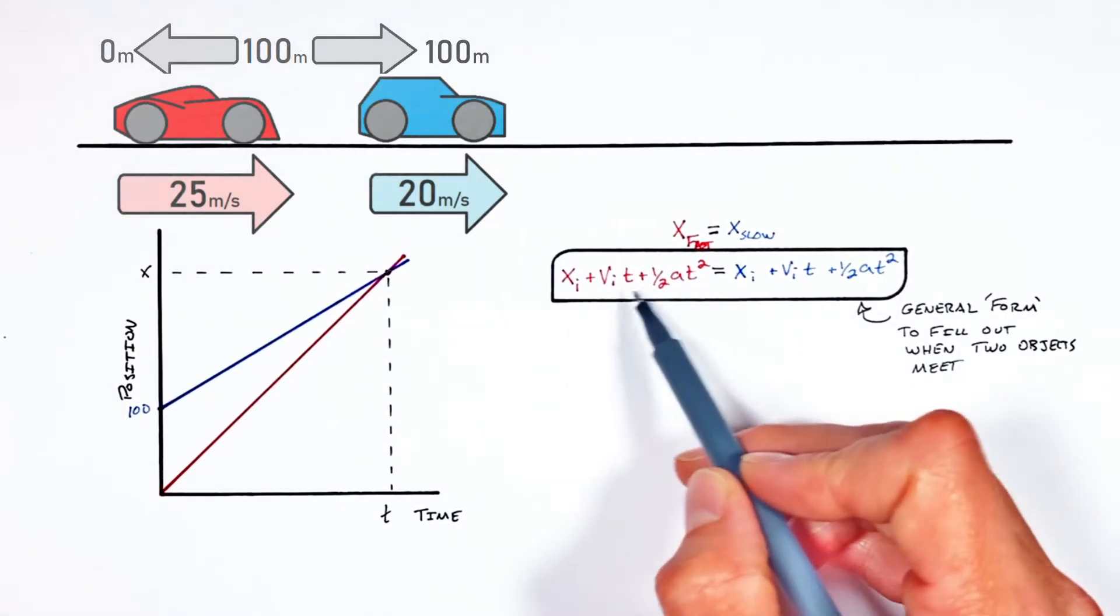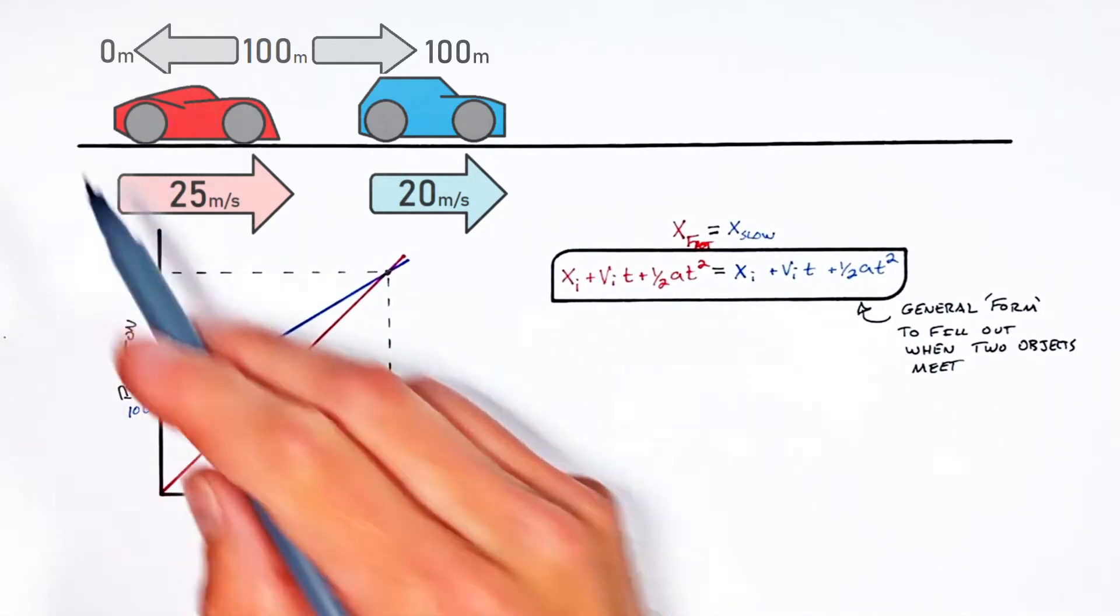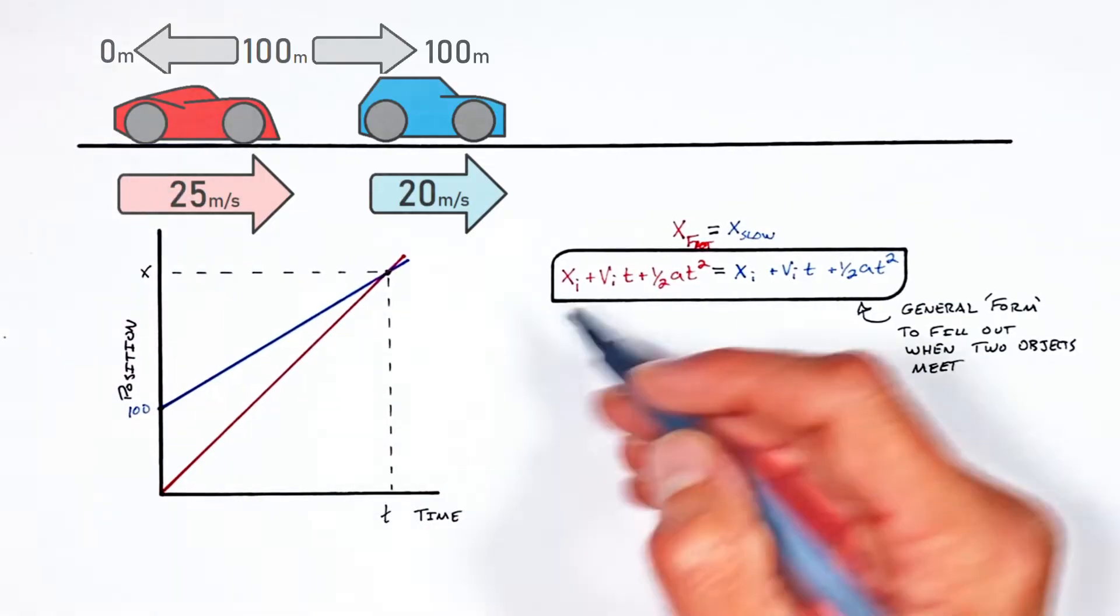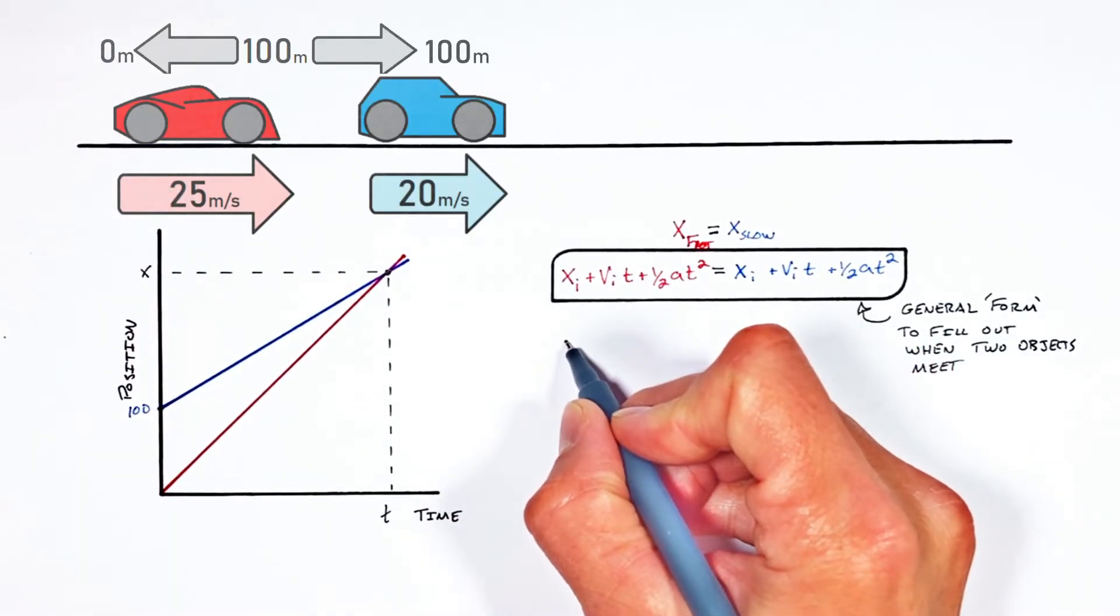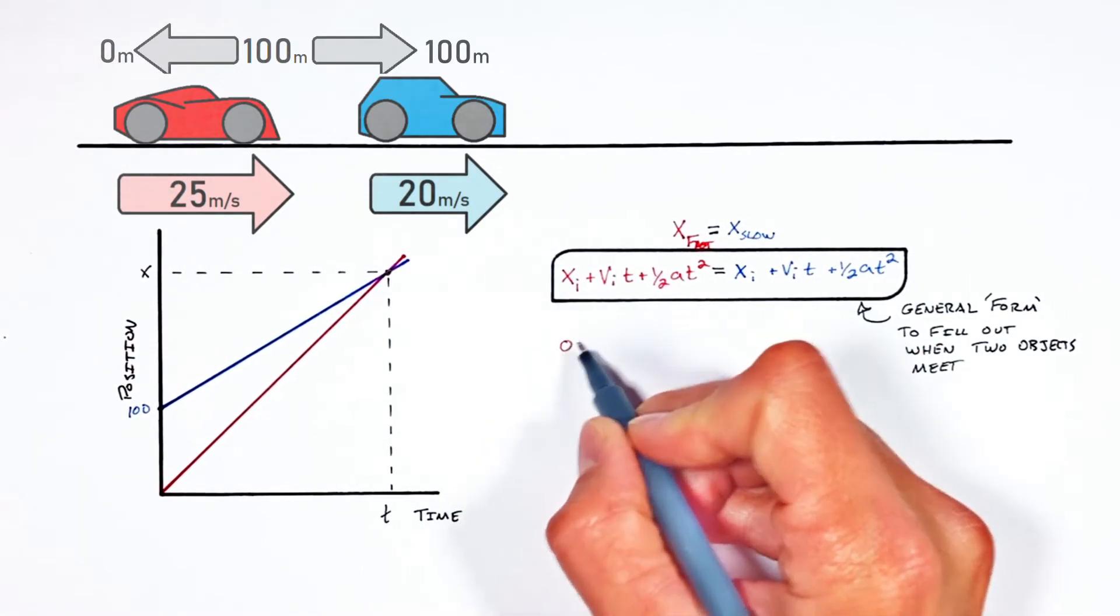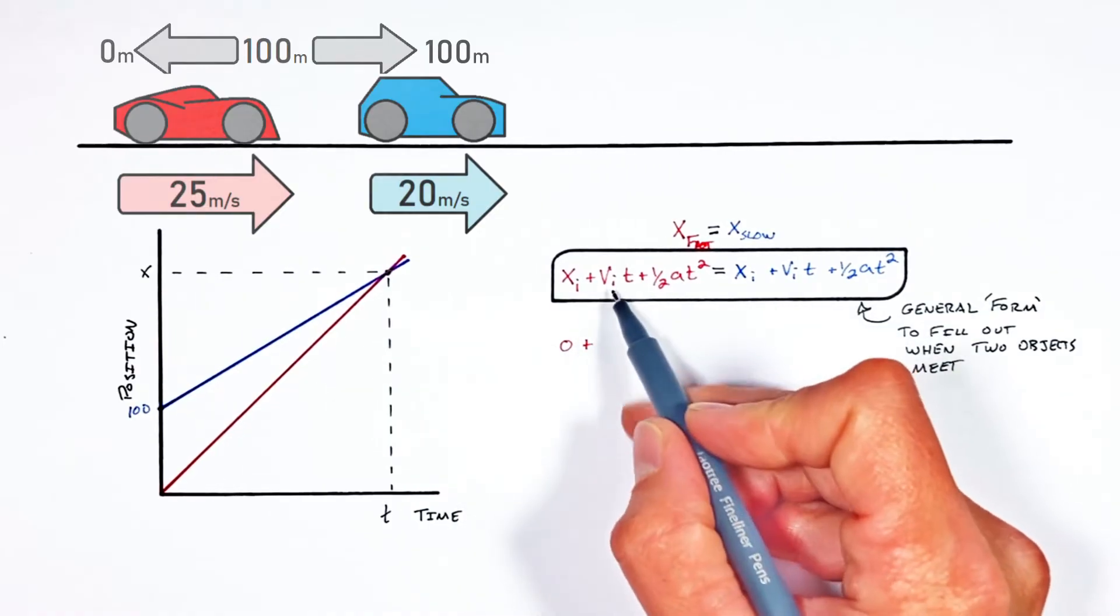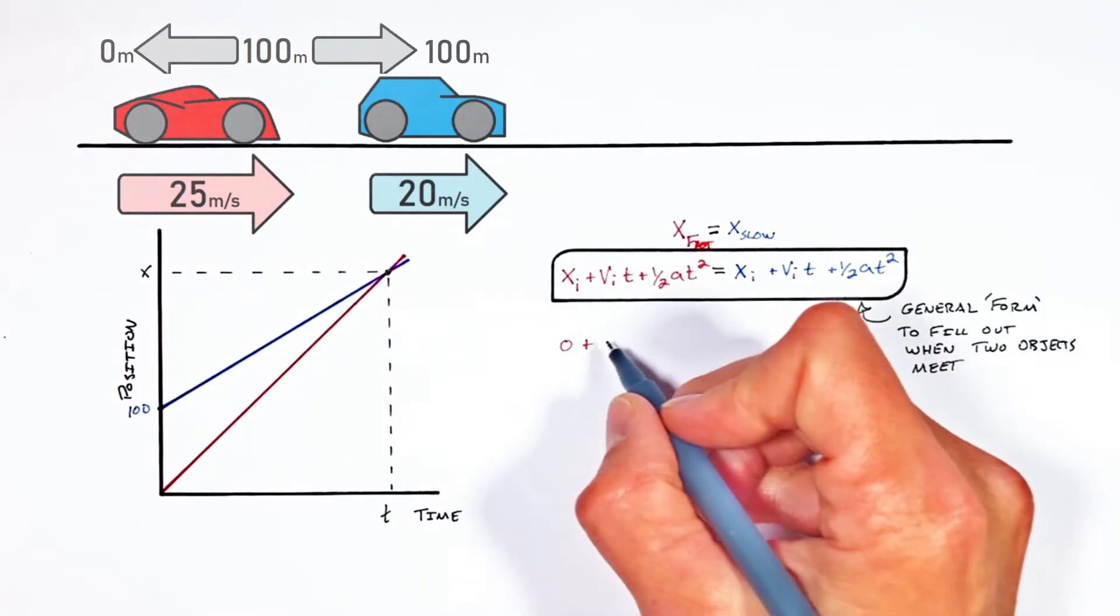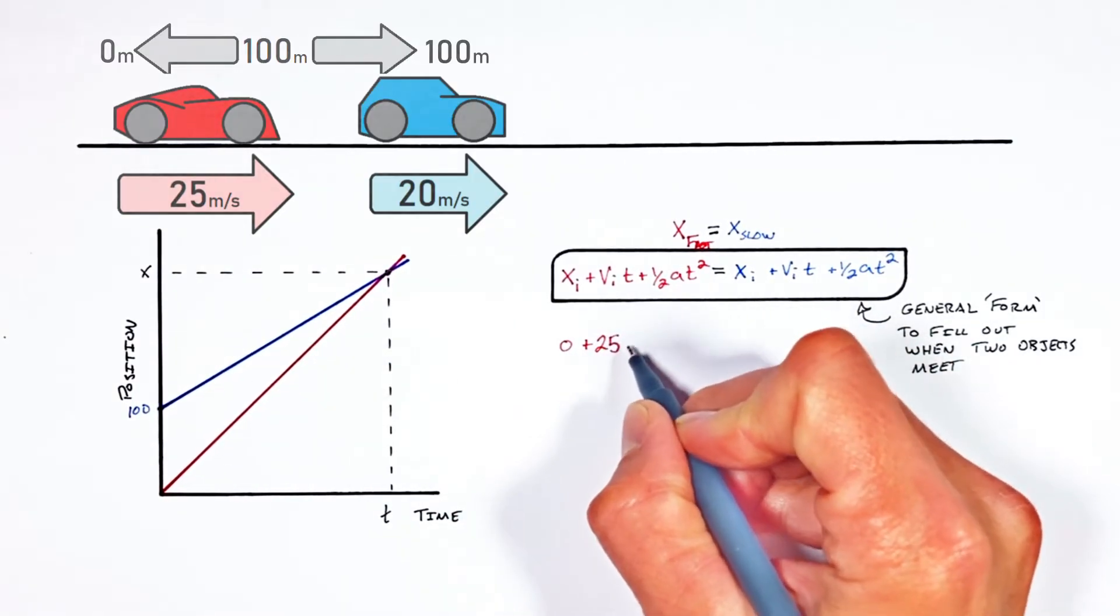So now we're going to take this side of the equality right here and make it specific to our fast car. You see, the fast car starts at a position that we already decided was zero. So I'm going to say the initial position is zero. Plus the initial velocity. Well, the car is initially traveling at 25 meters per second.